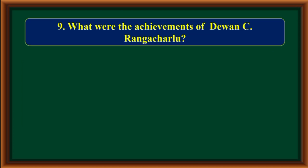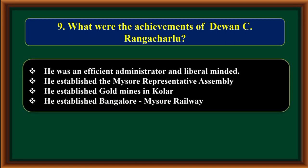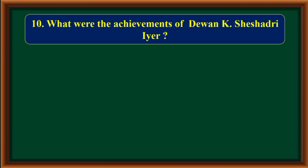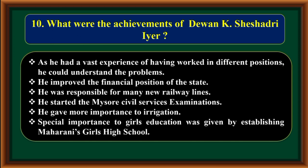What were the achievements of Diwan C. Rangacharlu? He was an efficient administrator and liberal minded. What were the achievements of Diwan K. Sheshadri Ayyar? He had vast experience working in different positions and could understand the problems well. He improved the financial position of the state. He was responsible for many new railway lines and started the Mysore Civil Services examinations. He gave more importance to irrigation and gave special importance to girls' education by establishing Maharani's Girls High School.